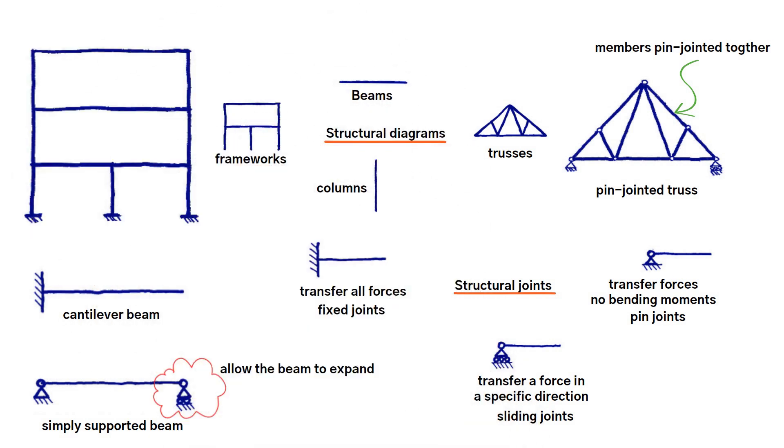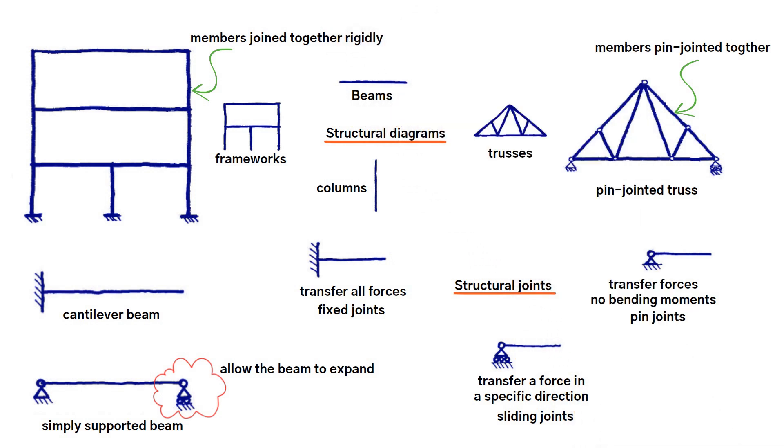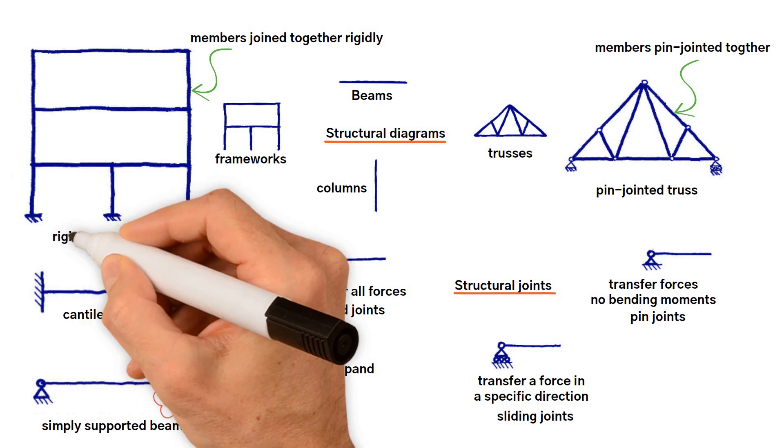Framed structures, like a portal frame, a goal post, have their members joined together rigidly. In fact, frames depend on this joint rigidity for their lateral stiffness, rigid jointed frames.